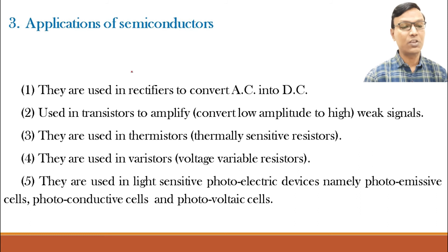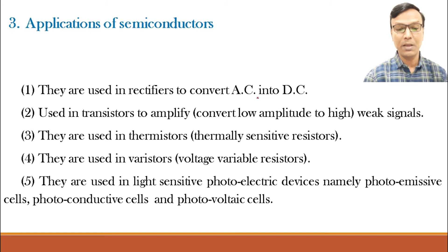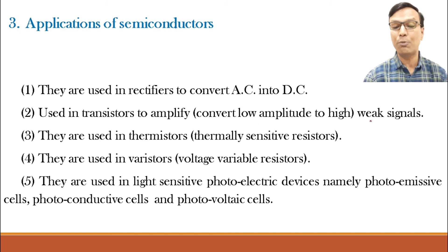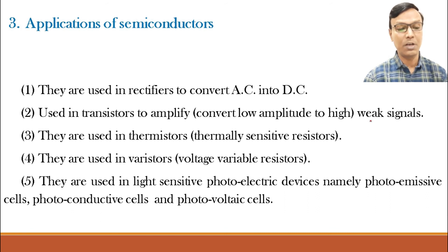Semiconductors are used in rectifiers to convert AC into DC. This is a very important property because the majority of our electronic devices — televisions, computers, laptops, music systems — all are working on DC, and what we are getting from the mains line is AC. They are used in transistors to amplify weak signals, converting a low amplitude signal to a high amplitude signal, which is a very important application of semiconductor material.